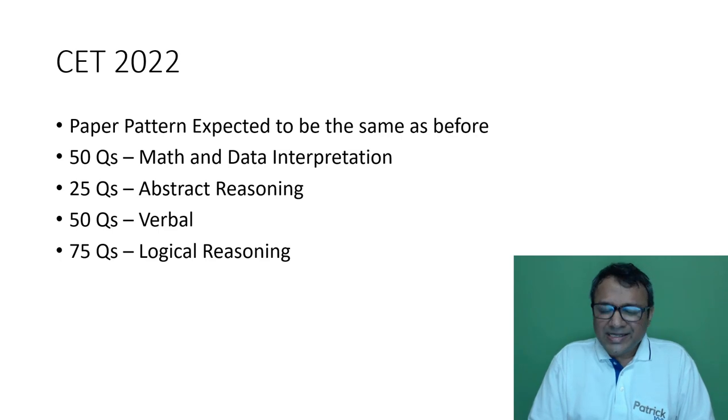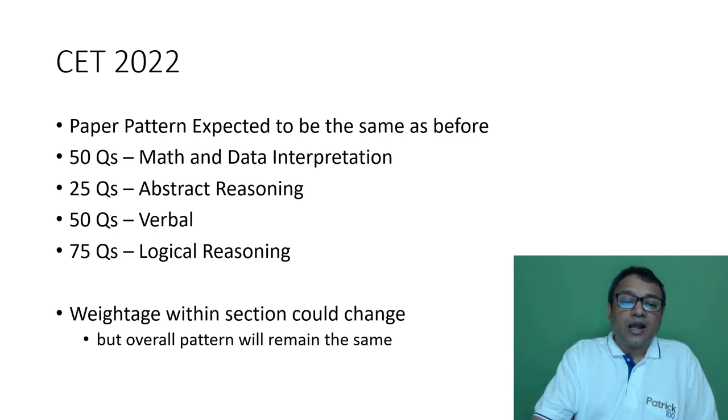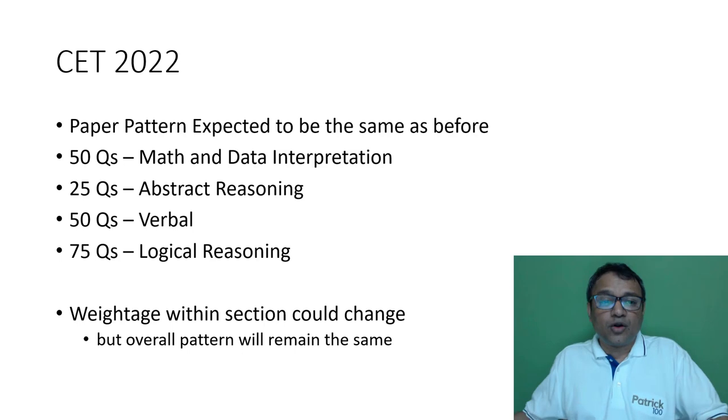I'm assuming they'll learn from their mistakes and hire someone who can make a paper which is more predictable. Weightage within the section could change to some extent. Instead of maybe 40 verbal questions, there could be fewer puzzles.